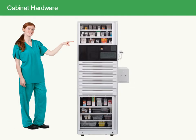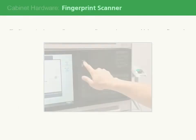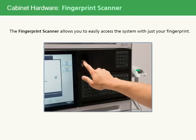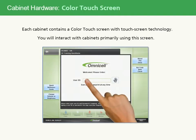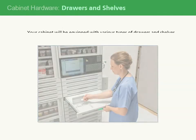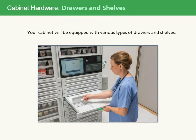Let's have a quick look at the cabinet hardware. The fingerprint scanner allows you to easily access the system with just your fingerprint. Each cabinet contains a color touchscreen, which you'll use to interact with the cabinet primarily. Your cabinet may be configured with various types of shelves with metal locking lid drawers or open, configurable drawers. All drawers and shelves use guiding lights to guide you to the location of your selected item.